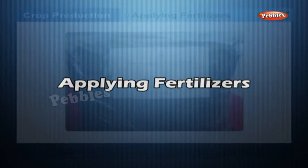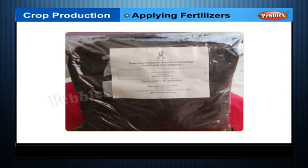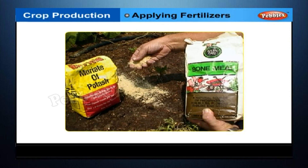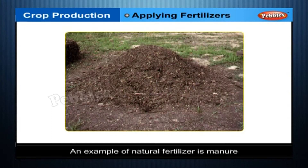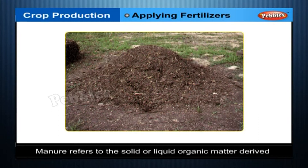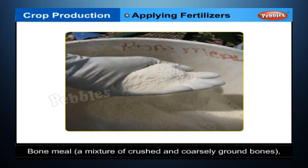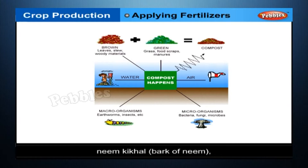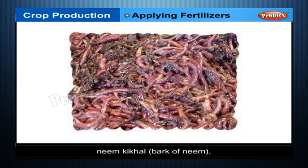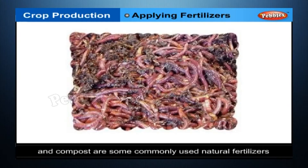Applying Fertilizers: fertilizers are natural or chemical substances which contain one or more nutrients essential for plant growth. Natural Fertilizers: an example of natural fertilizer is manure. Manure refers to the solid or liquid organic matter derived from animal wastes and plant residues. Bone meal, a mixture of crushed and coarsely ground bones, neem keekal, bark of neem and compost are some commonly used natural fertilizers.